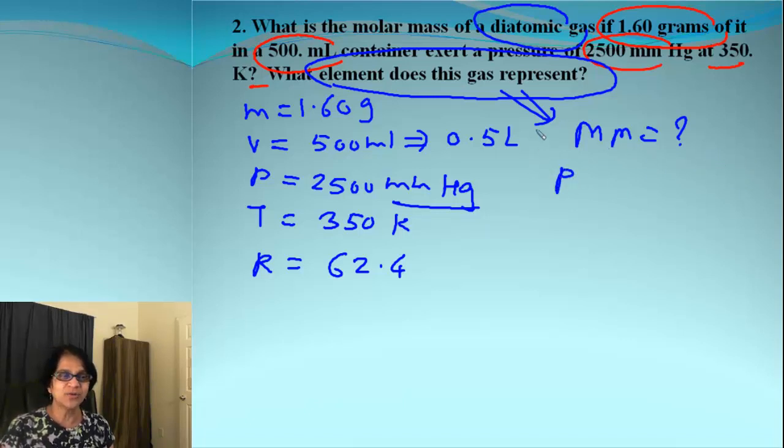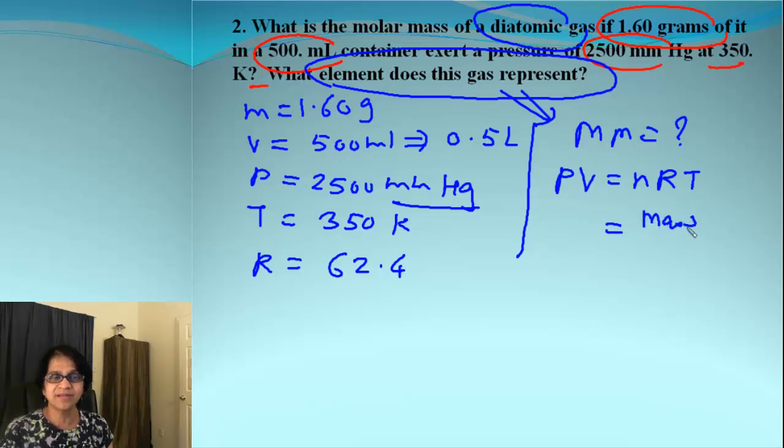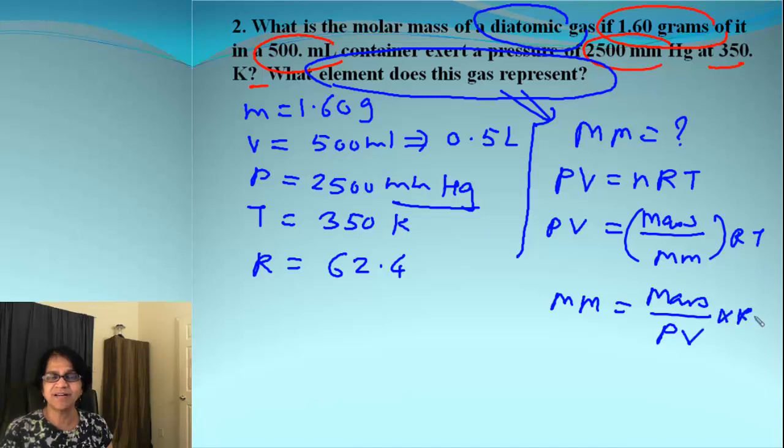Now, I am going to write down the regular formula for the gas laws, the ideal gas law, which is PV equals nRT. And then I can put the value for n as mass divided by molar mass. And then if I plug and chug, what I get is molar mass equals mass times RT divided by PV.